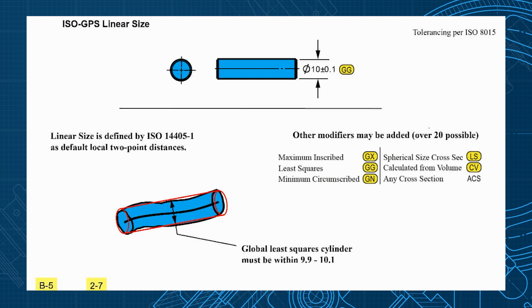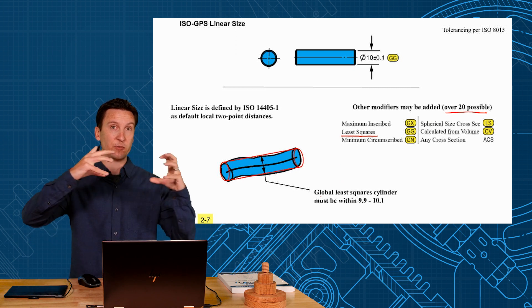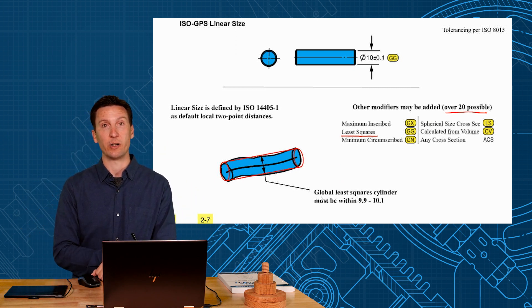So there are over 20 possible here that you can even combine with each other to create different specifications if you want. But if you put oval GG there that actually invokes a least squares requirement. So that means the global least squares, the best fit least squares cylinder, is put to your shaft and that has to be between 9.9 and 10.1.